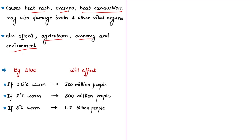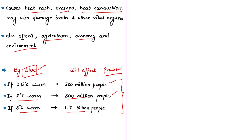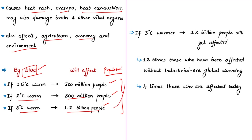The study estimates how annual exposure to extreme heat and humidity in excess of safety guidelines will affect the world's population. If the planet warms by 1.5 degrees Celsius, around 500 million people will be affected; if by 2 degrees Celsius, nearly 800 million people will be affected; and if by 3 degrees Celsius, around 1.2 billion people will be affected — which is 12 times more than those affected without industrial-era global warming and four times those affected today.